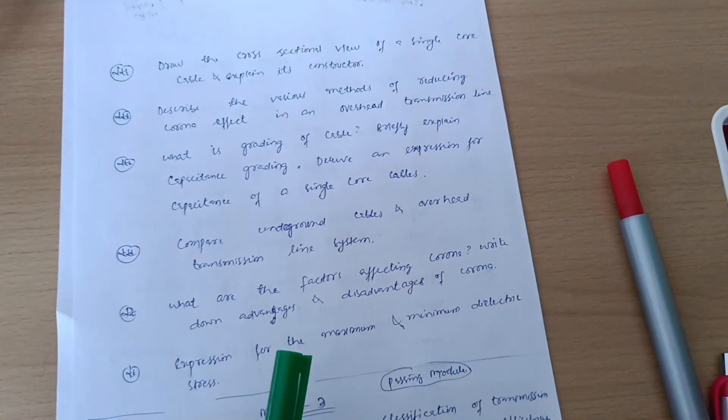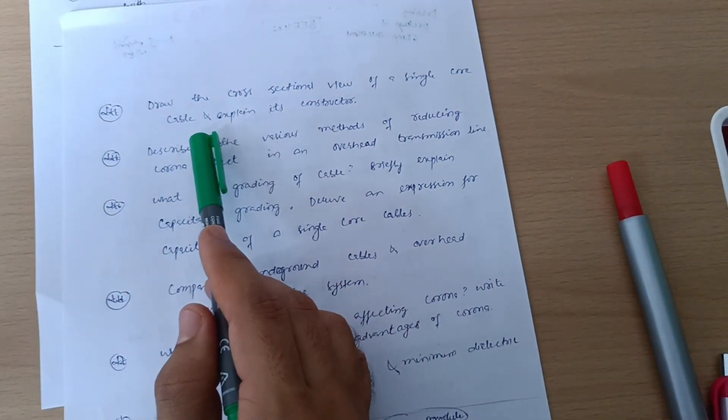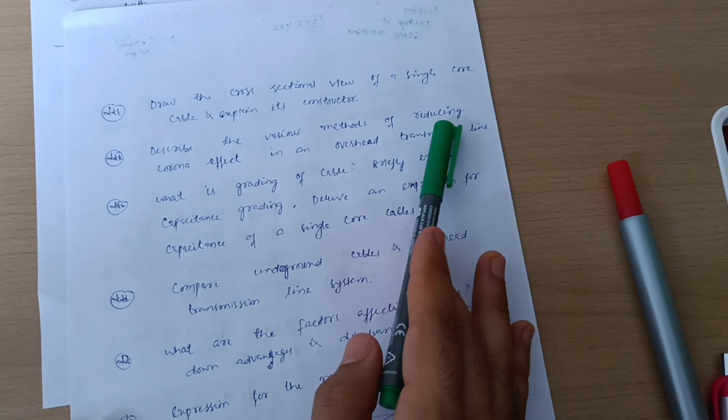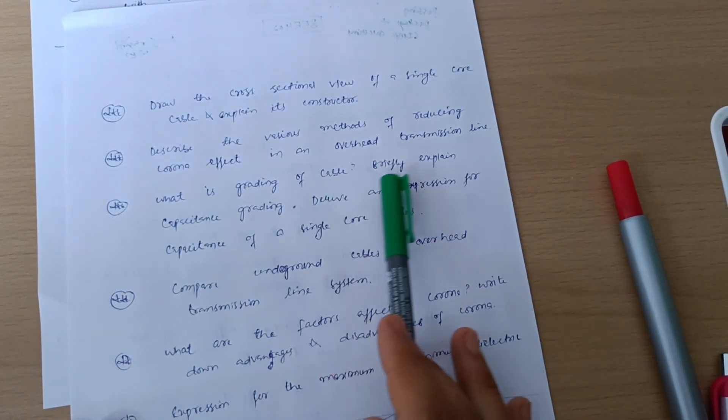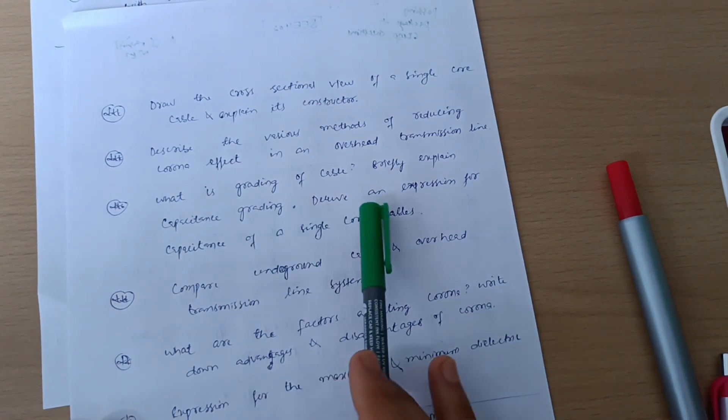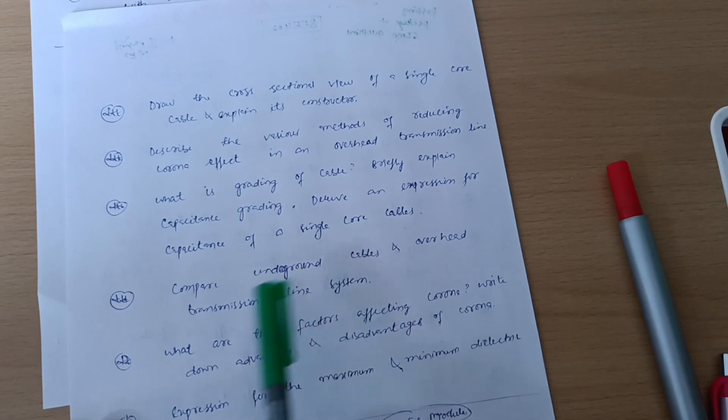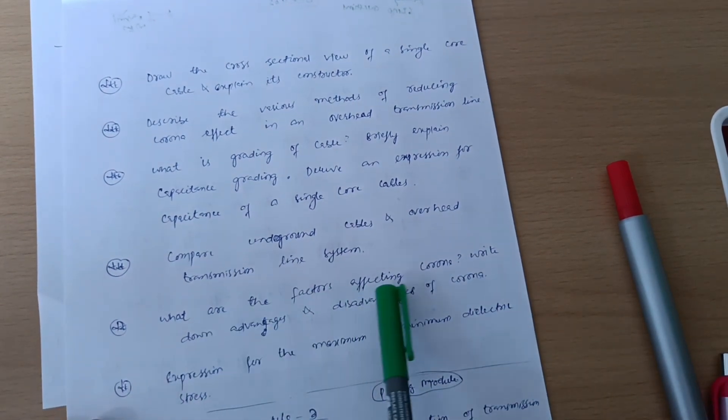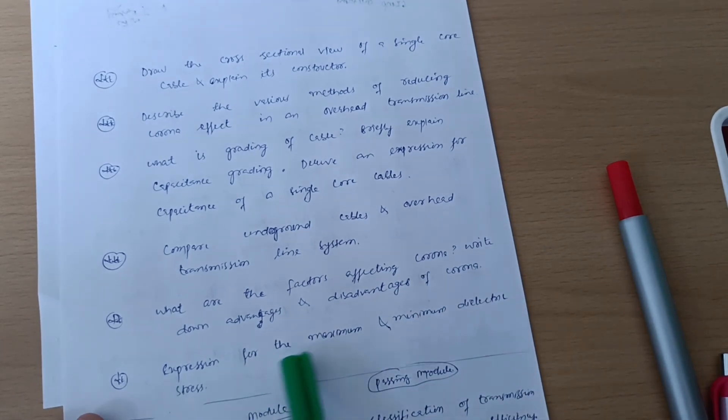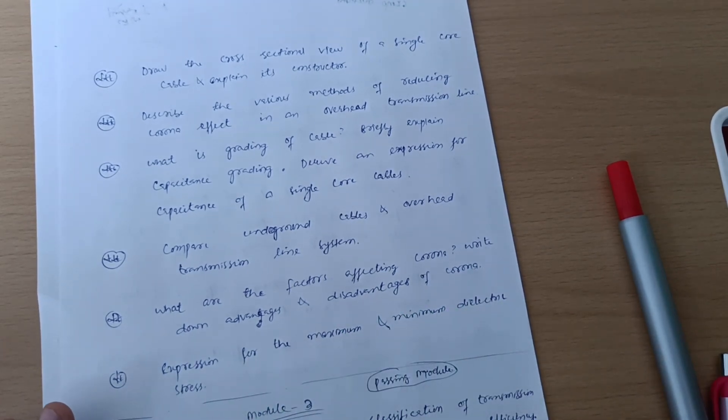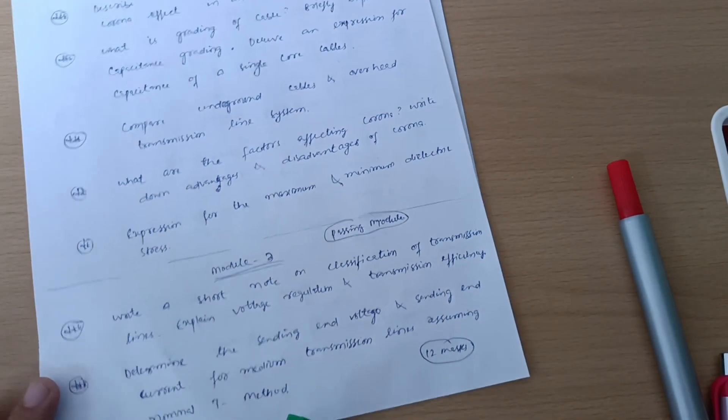Next we have: draw the cross-sectional view of a single core cable and explain its construction. Describe the various methods of reducing corona effect in an overhead transmission line. What is grading of cable? Briefly explain capacitance grading. Derive an expression for capacitance of a single core cable. Compare underground cables and overhead transmission line systems. What are the factors affecting corona? Write down advantages and disadvantages of corona. Expression for the maximum and minimum dielectric stress.